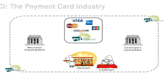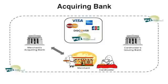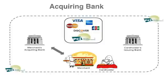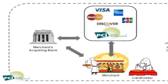To accept payment cards, the merchant signs an agreement with their bank, called the Acquiring Bank, to comply with the regulations of the bank and card brands. The merchant's Acquiring Bank agrees to comply with the regulations of the card brands, including the PCI data security standards.